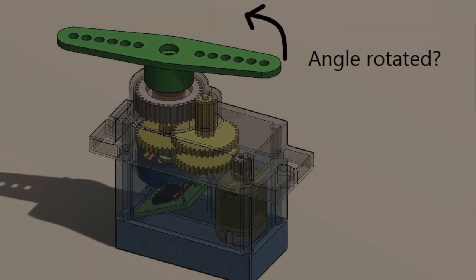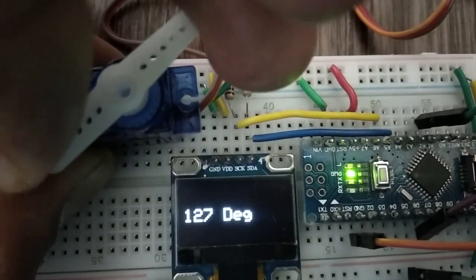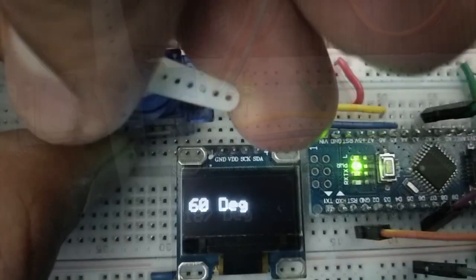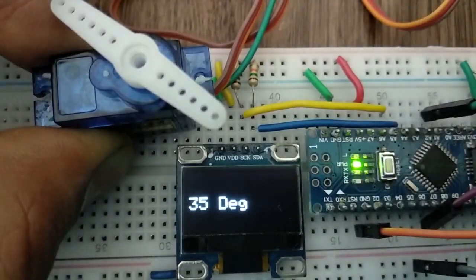Unfortunately, hobby servos don't offer a direct way to do so. In this video let's explore a hardware trick that will extend the servo's functionality to read angles.